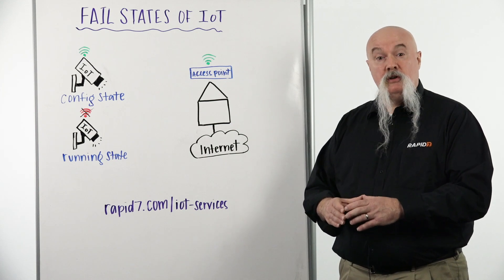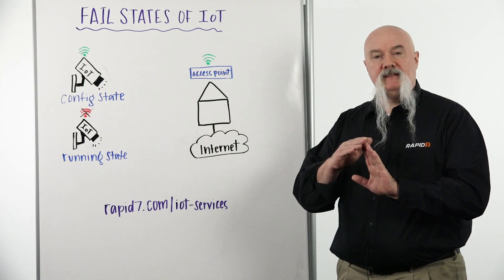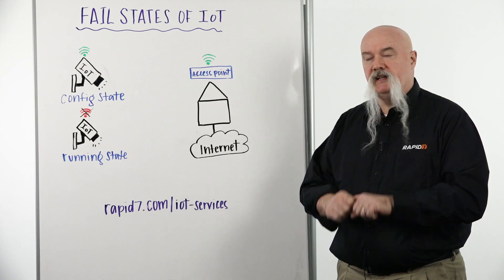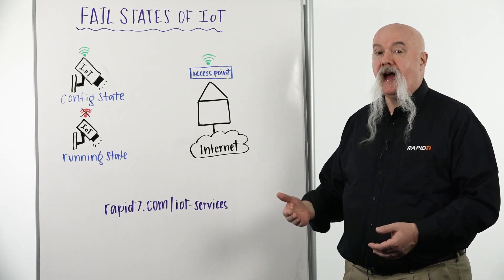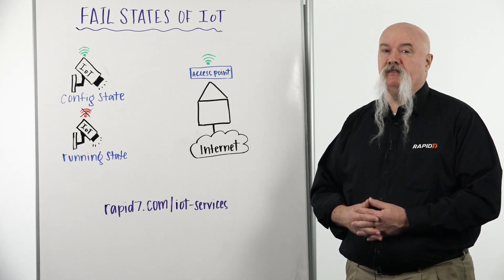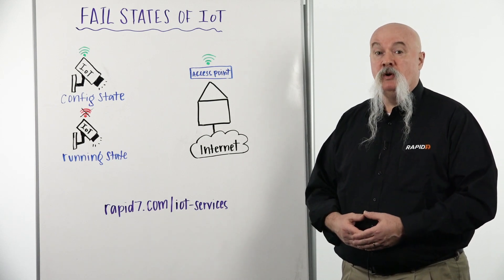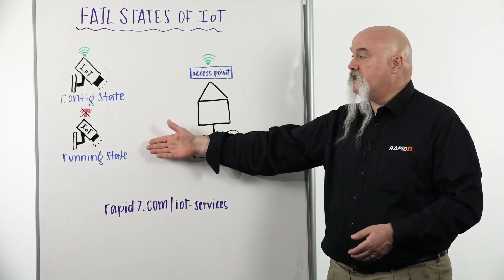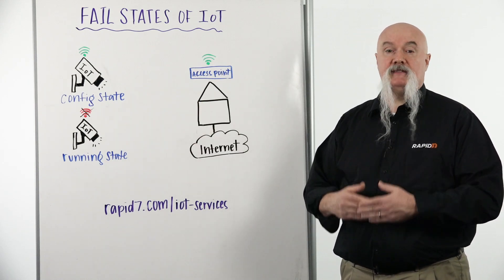During initial configuration, IoT will often fire up its own access point where you can connect and configure it. Once configured, it goes into a running state and connects to your home access point. One of the things we like to test for is what happens when access to your home access point goes away — does the device lose all connectivity, which is what we'd expect, or does it fail back into configuration mode, firing up its own access point again?